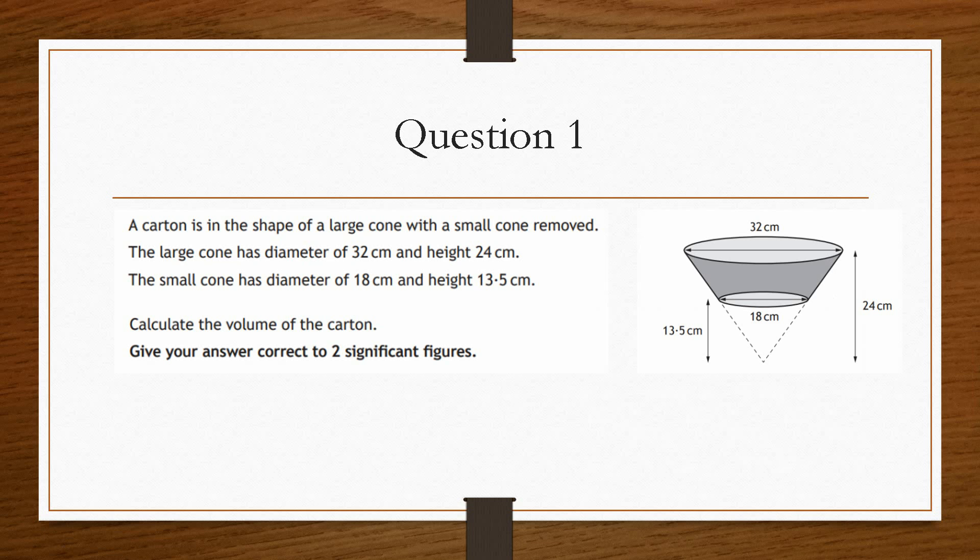Now let's take a look at the question. So here it tells us that we have a carton is in the shape of a large cone with a small cone removed. Now the large cone has a diameter of 32 centimetres and a height of 24 centimetres. So we can see that this overall shape has a diameter of 32, and from the very top to the very bottom is 24 centimetres.